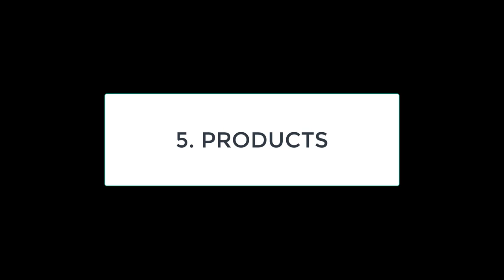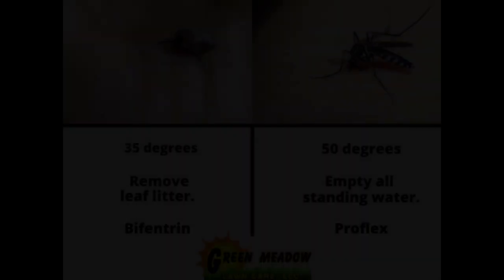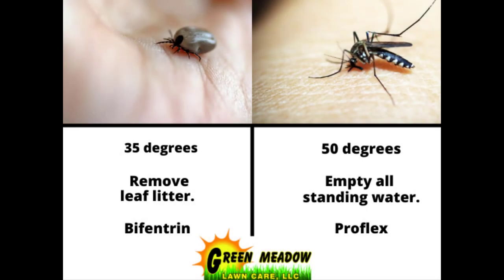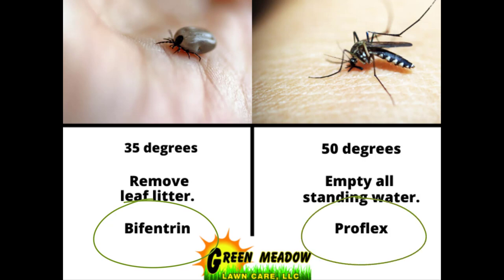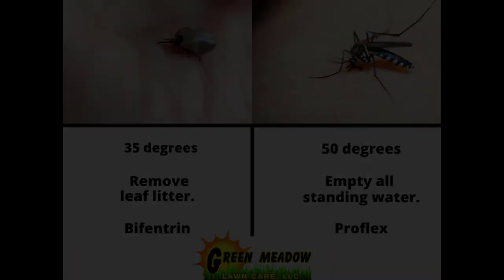Number five: products. They are similar but very different. One very effective tick control product is Bifenthrin, which is a very safe product labeled for both indoor and outdoor use. A very successful mosquito control product is PyGanic Proflex, which is also very safe and labeled for indoor and outdoor use.